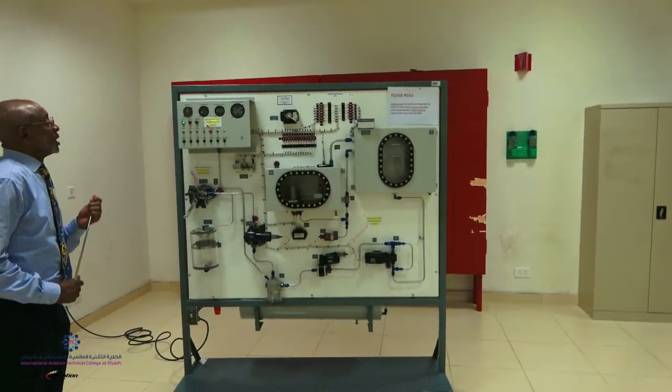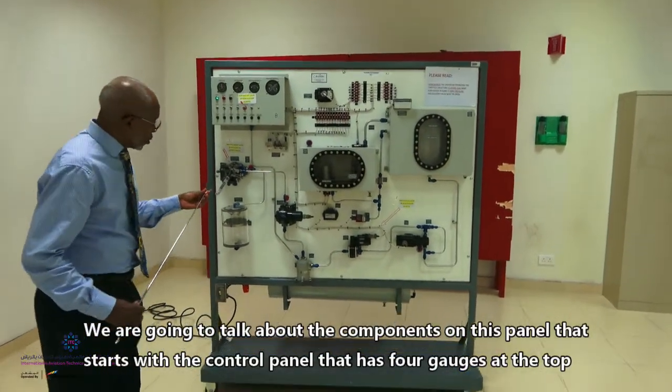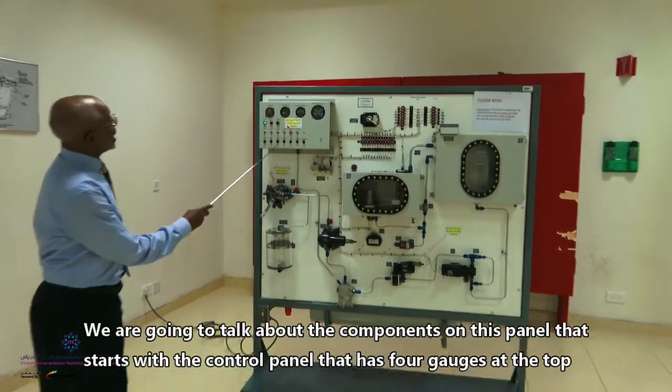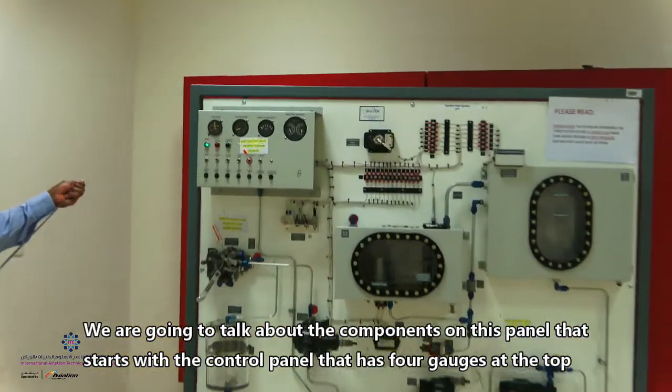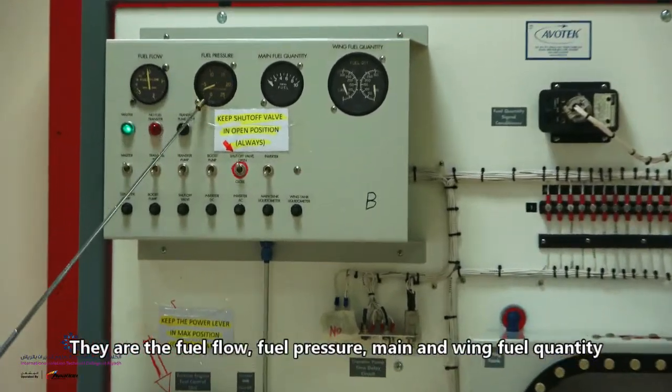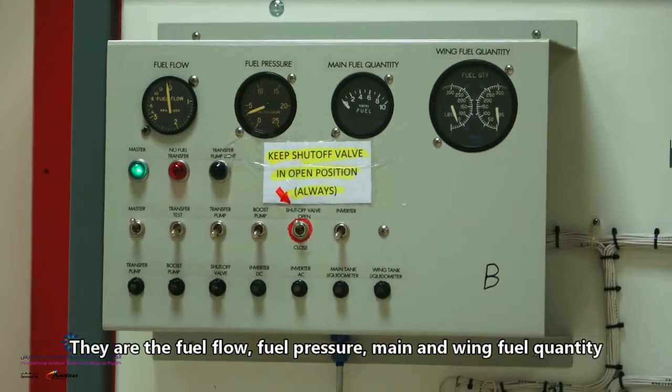Now, we're going to talk about the components in this panel and this component starts with the control panel. As you see the control panel, at the top you have four gauges: fuel flow, fuel pressure, main fuel quantity, and wing fuel quantity.